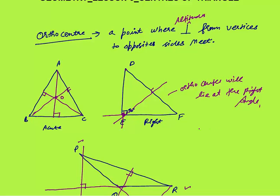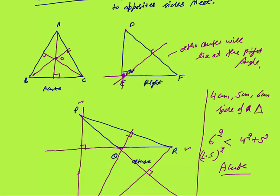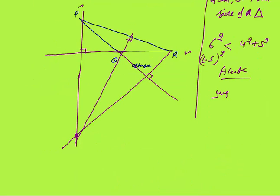A question can come like this: the sides of a triangle are 4 cm, 5 cm, and 6 cm — where will the orthocenter lie? First, determine the type of triangle. Find the square of the largest side: 6² = 36. Compare with 4² + 5² = 16 + 25 = 41. Since 6² is less than 4² + 5², this is an acute angle triangle, and the orthocenter will lie inside the triangle.